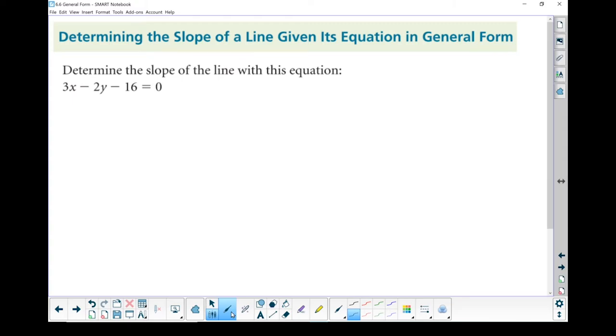Continuing on talking about general form, let's talk about how do you find the slope of a line if you've been given general form. We talked about it before. General form, the numbers, the a, b, and c values aren't useful to find as anything directly. So how do we find that slope?